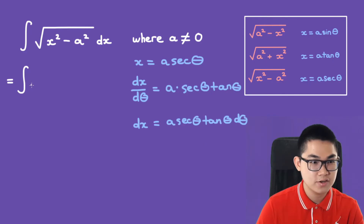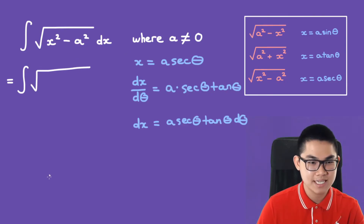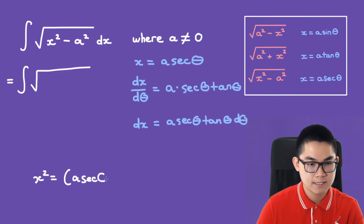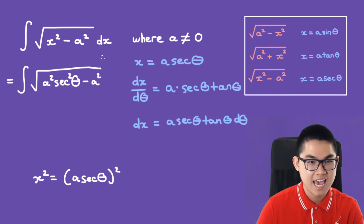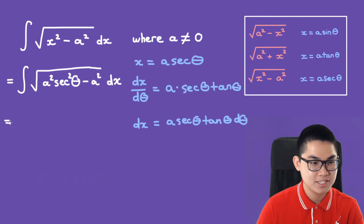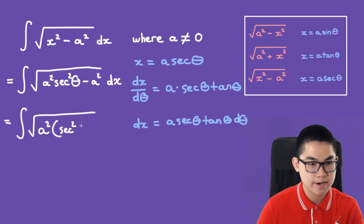We have the integral of the square root of x squared. Since x is a times secant, x squared will be a secant squared, which equals a squared secant squared, minus a squared. The next step is to factor out the a squared, giving us the integral of the square root of a squared times secant squared minus 1, dx.